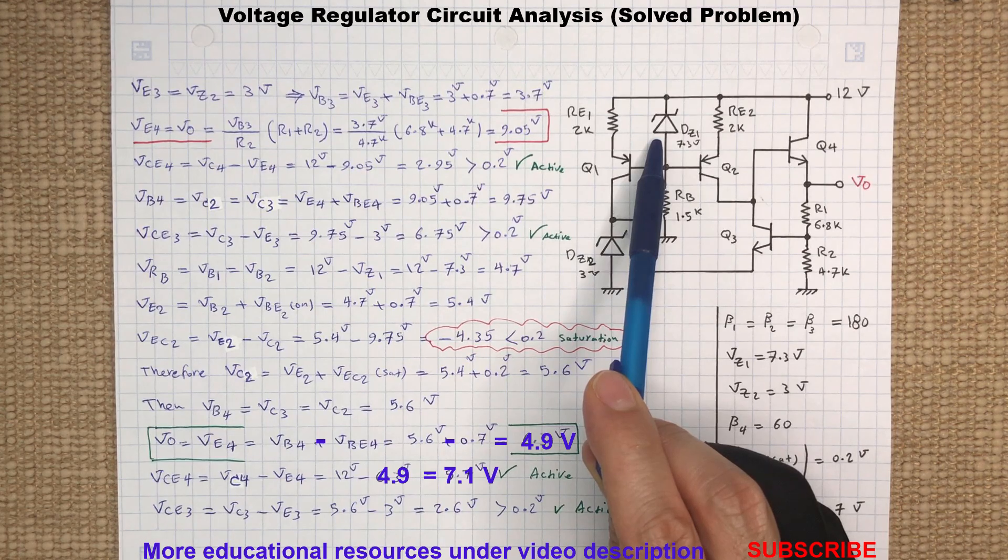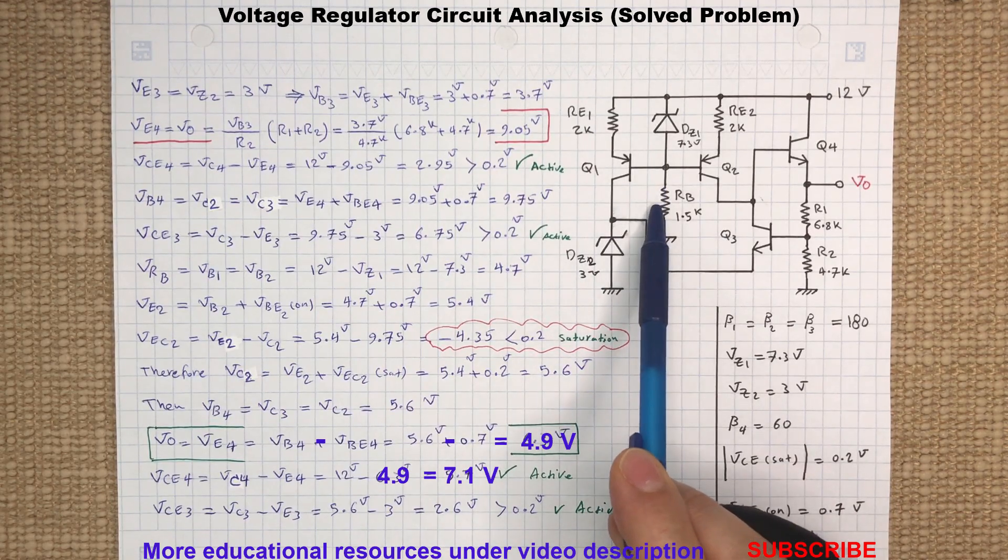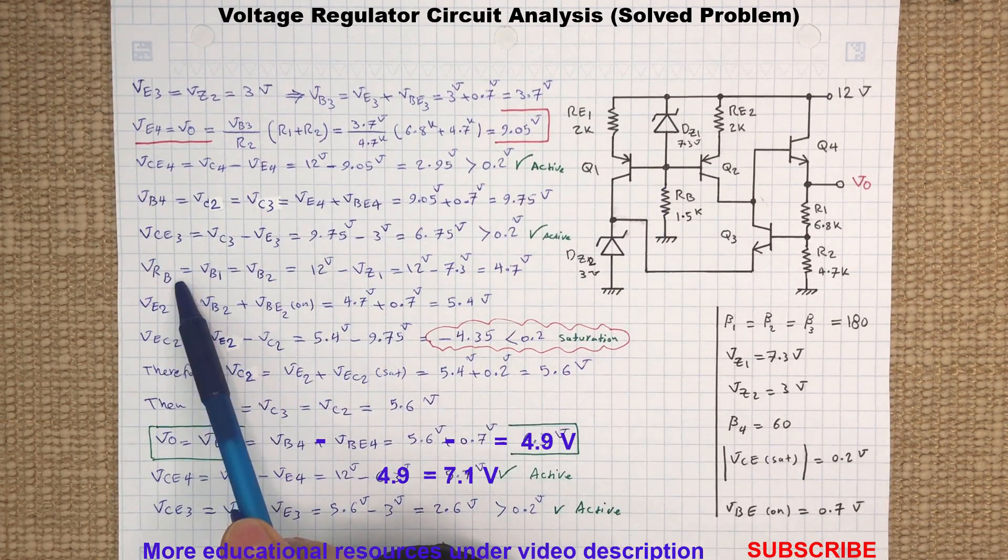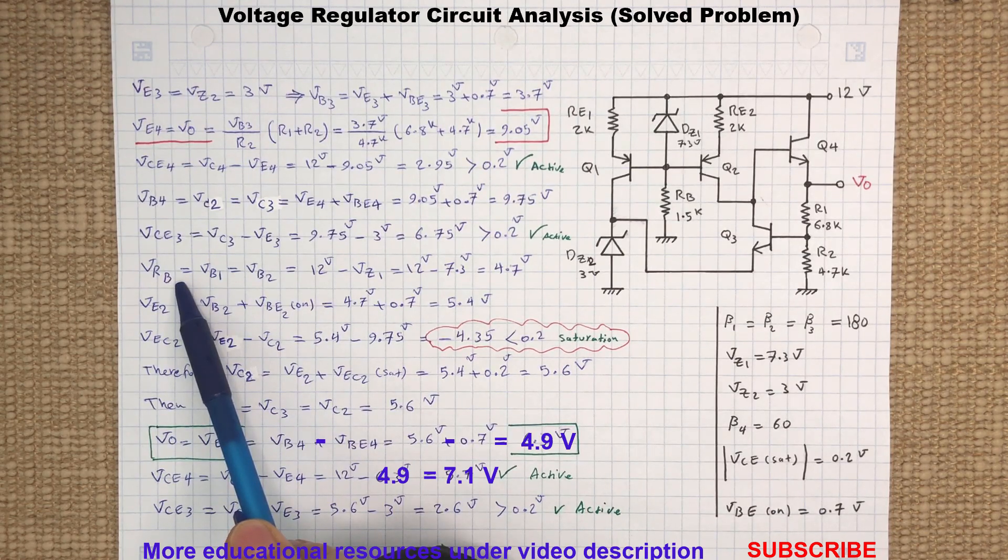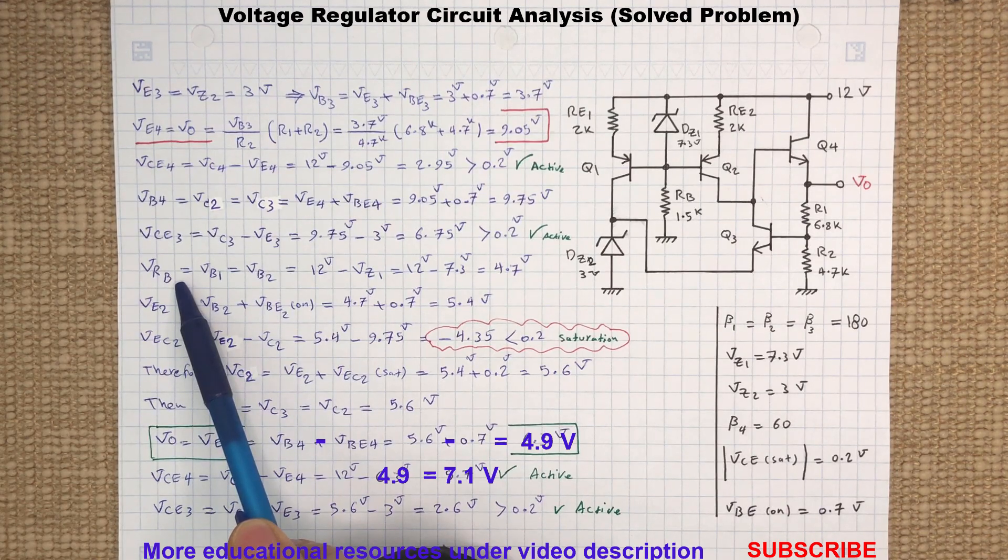By Kirchhoff's voltage law, we know that the voltage across the Zener diode DZ1 and the voltage across resistor RB must be 12 volts. Therefore, voltage at the base of Q1 and Q2 can be determined by subtracting the Zener voltage from the 12 volts, assuming the Zener diode is in the breakdown region.